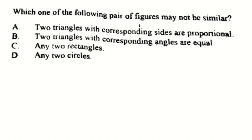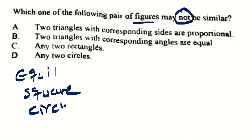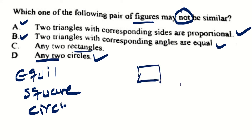Which one of the following pair of figures may NOT be similar? Any two equilateral triangles are always similar. Any two squares are always similar. Any two circles also. Choice D — two triangles with corresponding sides proportional — is correct, that's the definition of similarity. Choice B — two triangles with corresponding angles equal — is also true by the angle-angle theorem. But choice C — any two rectangles — we cannot say they are generally similar. There must be some precondition. So the answer is C.